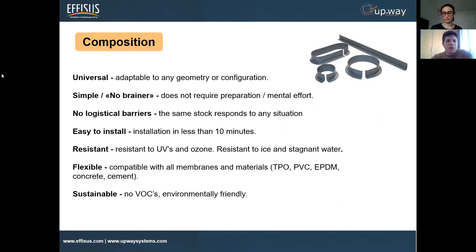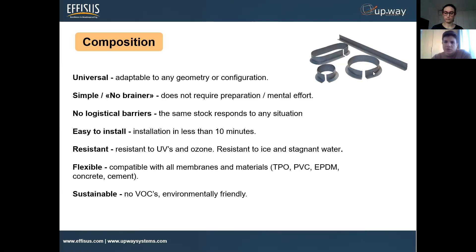Here is a little bit about the composition and features of this material. It comes in a one-meter-long membrane curve and is very flexible. It's composed of aluminum combined with a rubber material, which allows you to shape it as you want — adapted to any geometry, any configuration. As you can see, you can have an oval shape, a circular shape — you name it, you can shape it as you want.